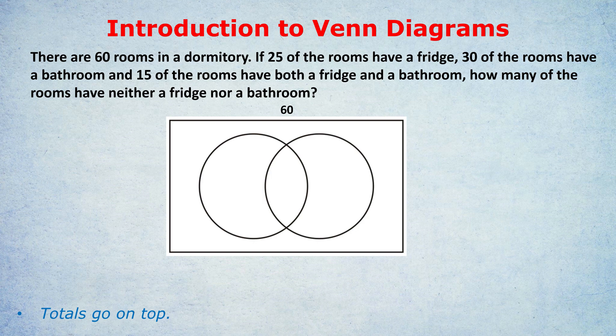When it says 25 of the rooms have a fridge, that does not go inside the fridge bubble — it goes on top. The fridge bubble has 25 in total. If I put it inside the bubble, that would mean those 25 rooms have a fridge only and not a bathroom, but we don't know that. We just know that 25 rooms have a fridge — that could be with a bathroom as well, or without. It's the total, so it goes on top. Similarly, 30 of the rooms have a bathroom, so that also goes on top.